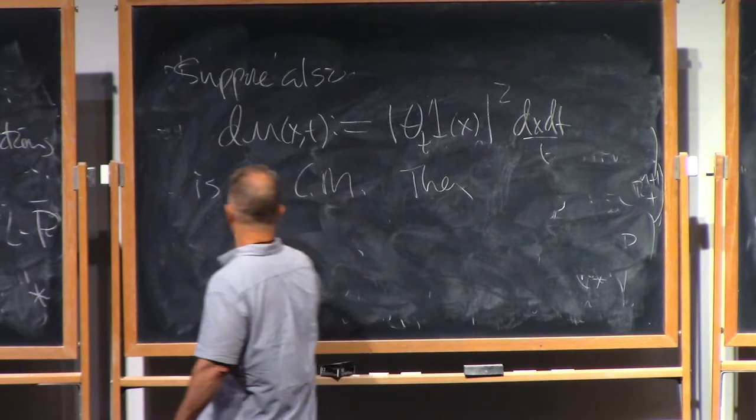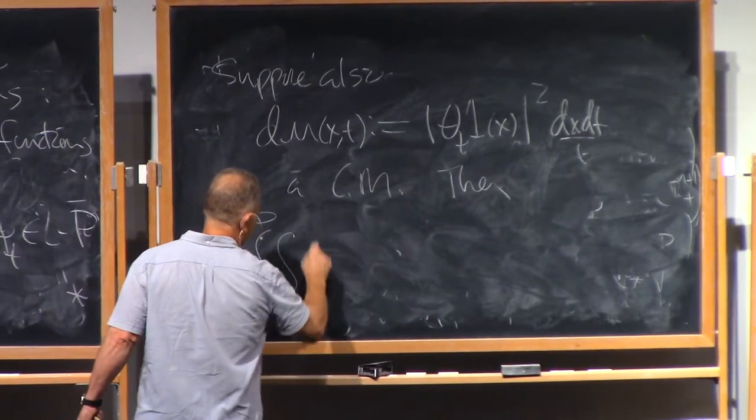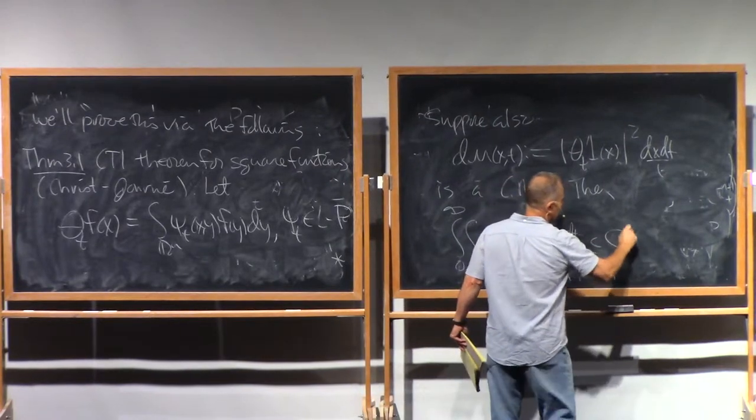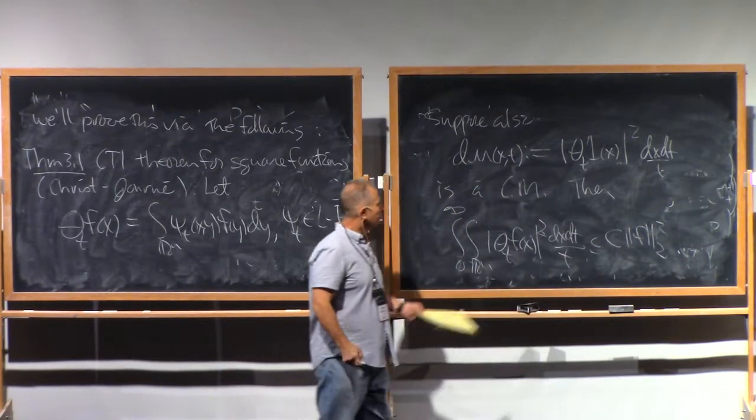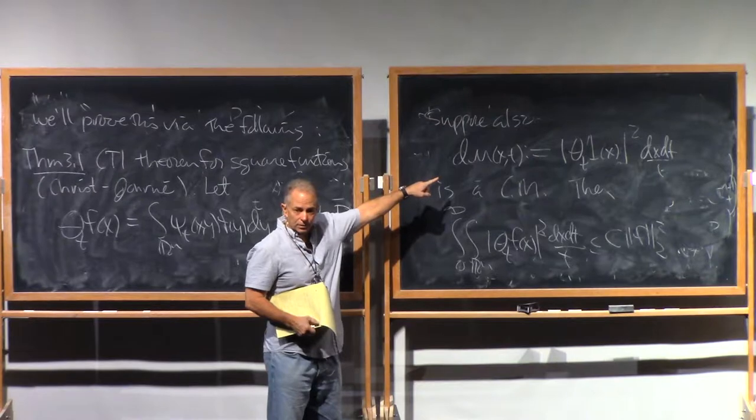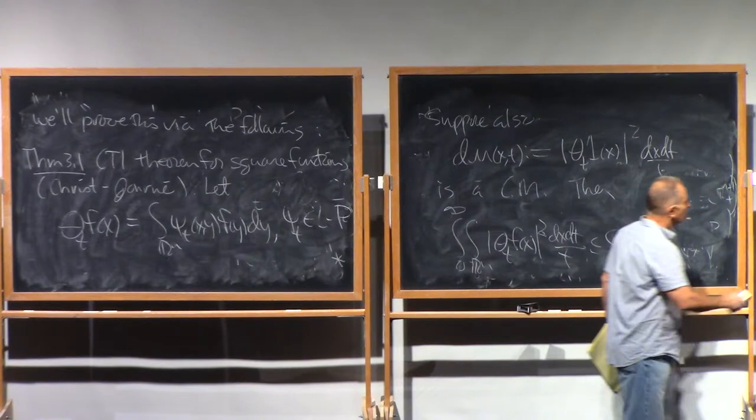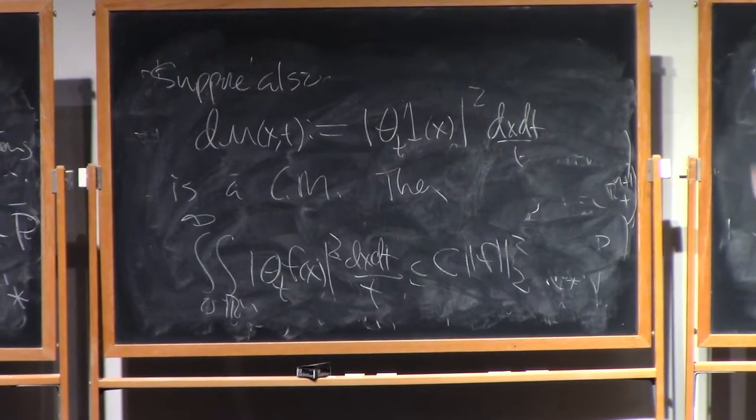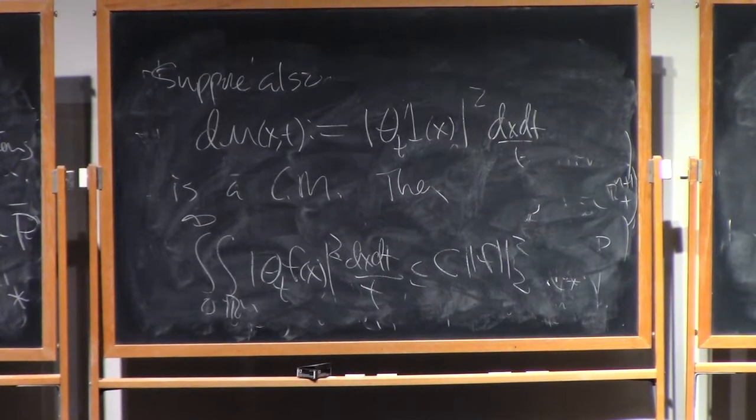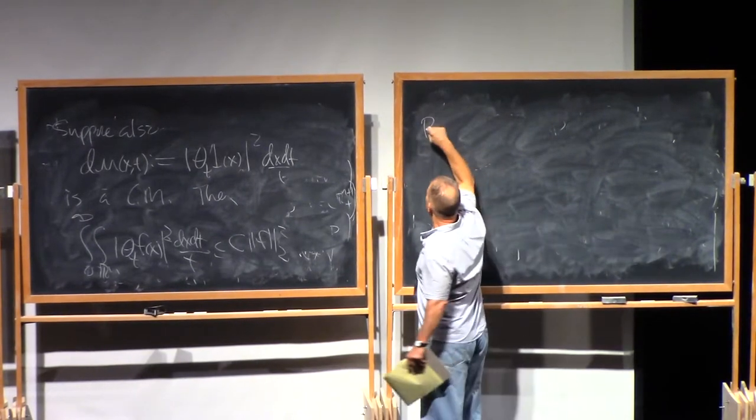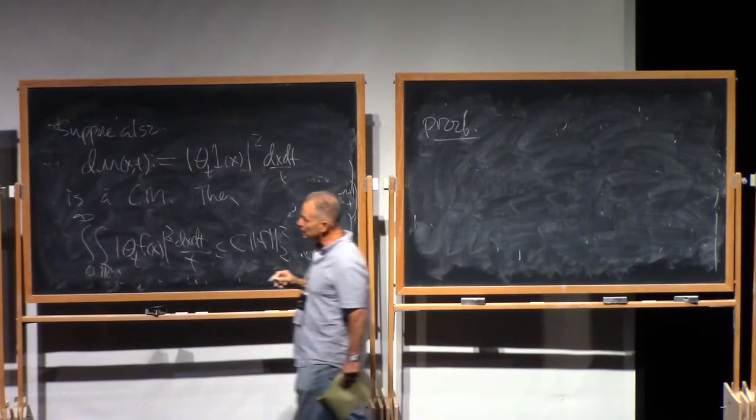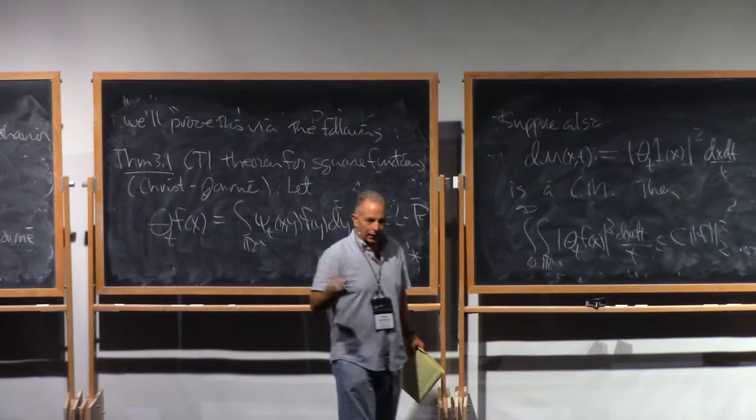This is one of the themes of this mini-course is that a lot of times to control a Calderon-Zygmund operator or a singular integral, the best approach is to control some related square function. That's not an entirely new point of view that people have known that for a while. But it's worth emphasizing. So this T of one theorem says the following thing. So let's let, as usual, theta_T be given by integration against the usual deal where psi_T is going to be a Littlewood-Paley family. Satisfies the Littlewood-Paley size and smoothness conditions.